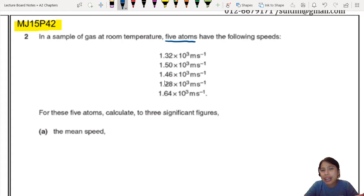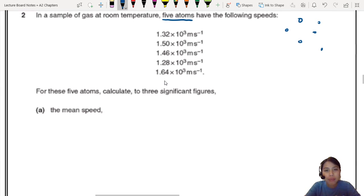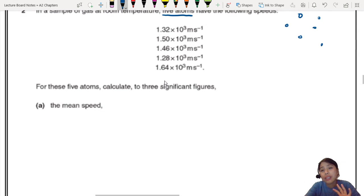How do they even know exactly what speed those 5 atoms have? That's nonsense. But anyway, this is a very weird question. It's the only one of its kind in the past year records. So it knows the speed of this 5: 1, 2, 3, 4, 5. For this 5, calculate to 3SF the mean speed.